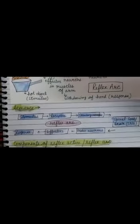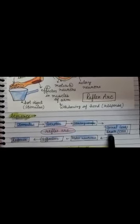Here is the sequence of events taking place. First, the stimulus goes to receptors, then to sensory neurons, and through sensory neurons it goes to the spinal cord or brain.